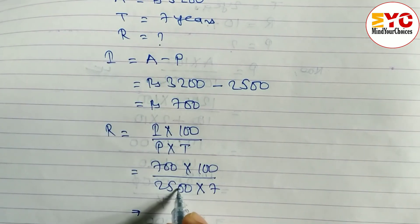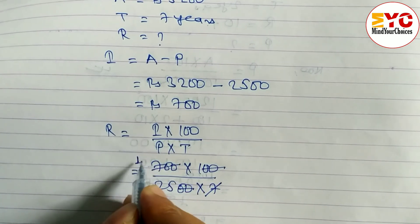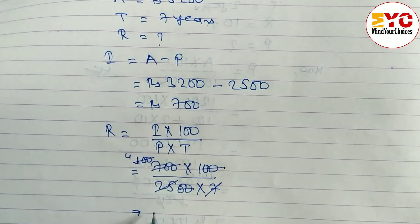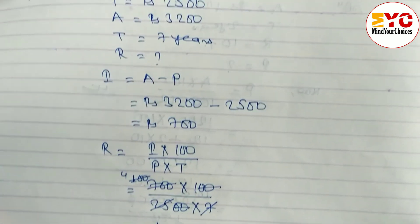Now let's calculate. Two zero, two zero cancel out, seven one, the seven, two zero and 25, 4 times. So answer is 4 percent. So rate of interest is equal to 4 percent. So hope you understand this question related with simple interest.